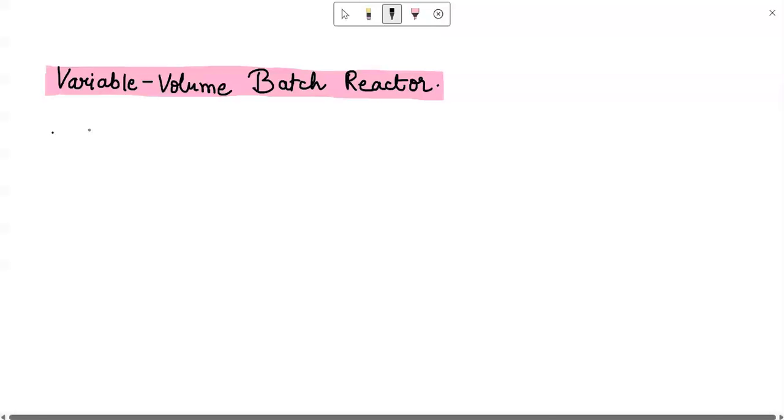In this video we are going to talk about a varying volume batch reactor or a variable volume batch reactor. These reactors are more complex than the simple constant volume batch reactor that we have studied so far. The main application of this kind of varying volume batch reactors is in the case of microprocessing field.